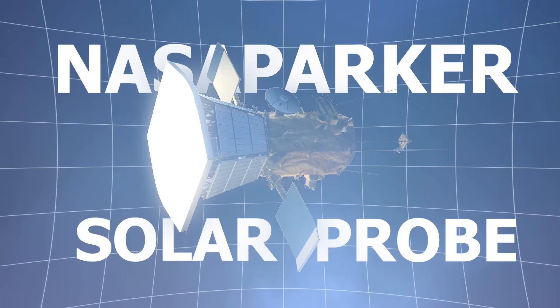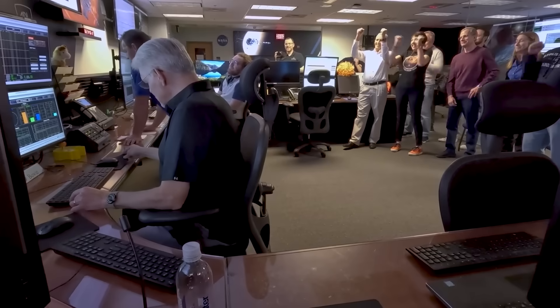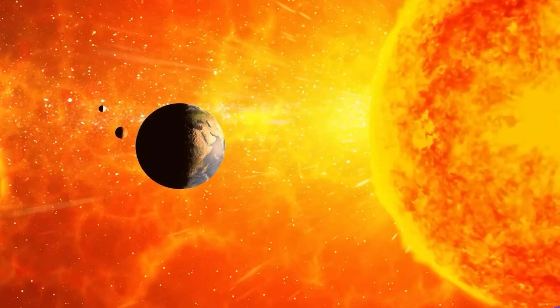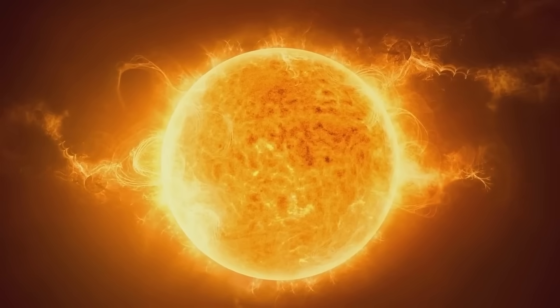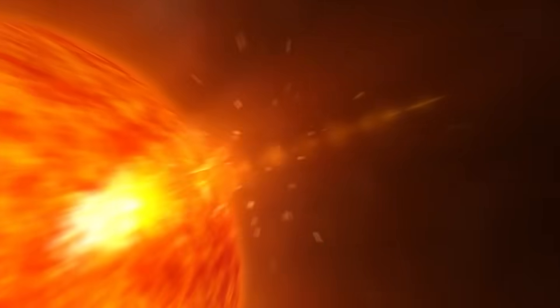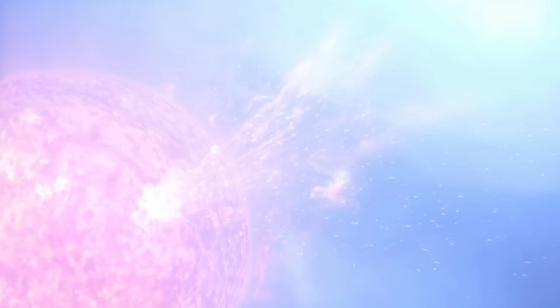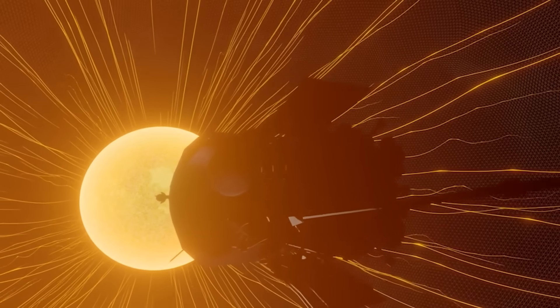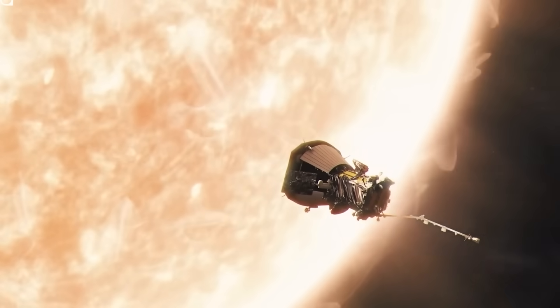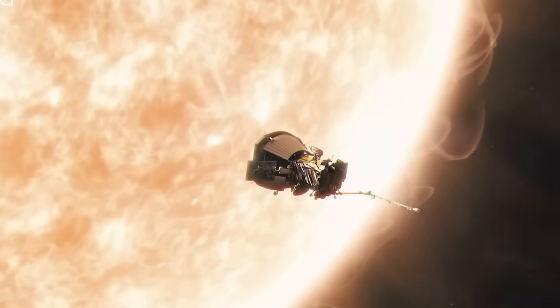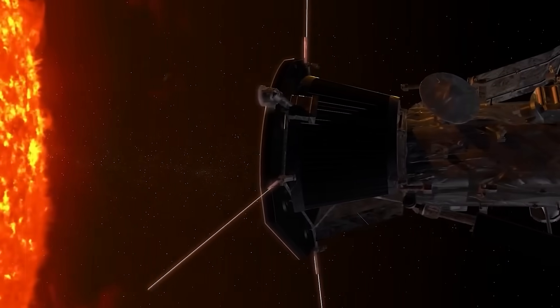NASA's Parker Solar Probe has just sent back data that has left scientists stunned. For the first time in history, we're seeing the sun in a way that was never possible before. And what was just discovered is changing everything we thought we knew about our star. This spacecraft is the closest human-made object to ever approach the sun's surface, venturing through extreme heat and radiation to gather data that was once beyond our reach.